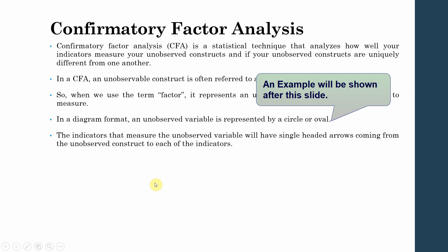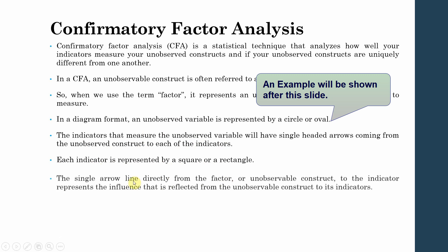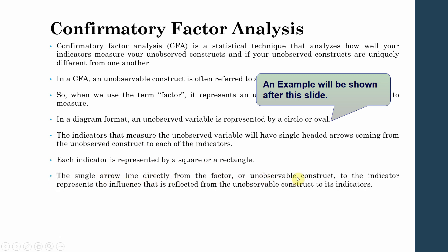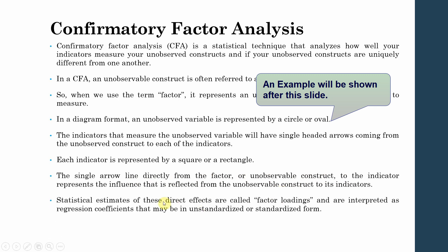Each indicator is represented by a square or rectangle. The single-headed line from the factor or unobservable construct to the indicator represents the influence reflected from the unobservable construct to its indicator — that is your reflective construct. Statistical estimates of these direct effects are called factor loadings, and this shows how well the items are representing the underlying construct. They are often interpreted as regression coefficients in unstandardized or standardized form.